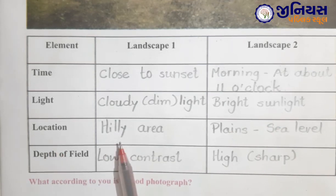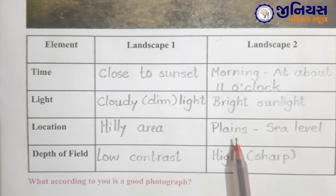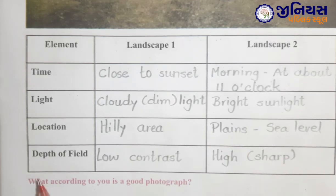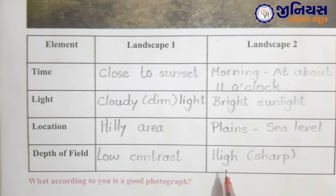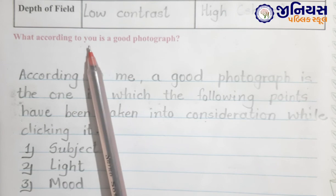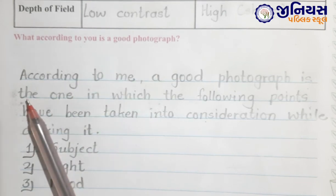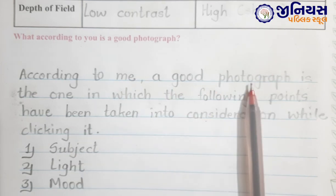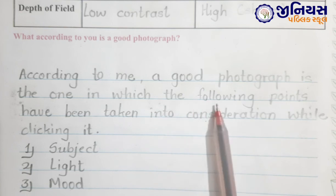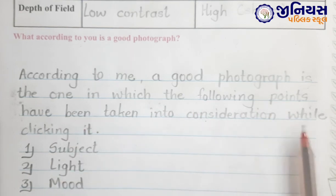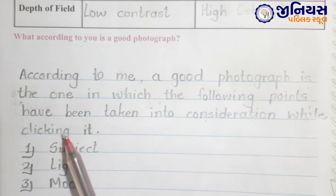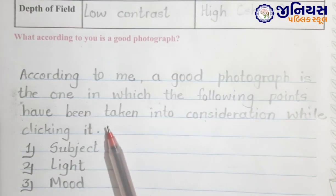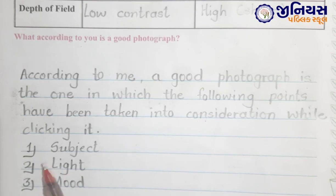Location: landscape 1 is a hilly area; landscape 2 is plain sea level. Depth of field: landscape 1 is low contrast; landscape 2 is high or sharp. What, according to you, is a good photograph? According to me, a good photograph is one in which the following points have been taken into consideration while clicking it: first point is subject, second point is light, and third one is mood.